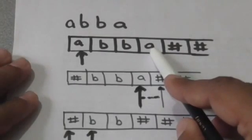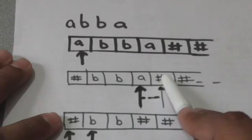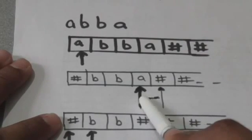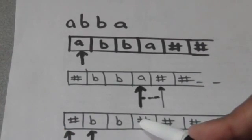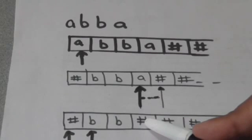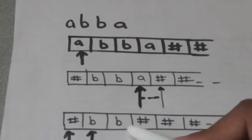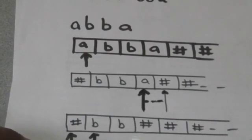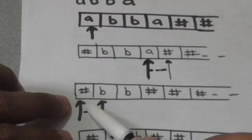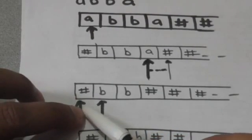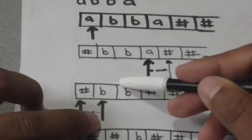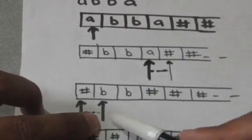To reach the last symbol of the string, the Turing machine first finds the first blank symbol to the right of the current head position and then moves its head one position to the left. After erasing the last symbol, the Turing machine checks if any input symbols still remain in the string. For this, it first finds the first blank symbol to the left of the current head position and then moves its head one position to the right.